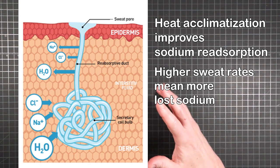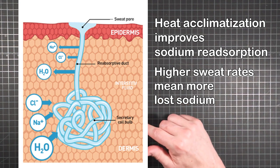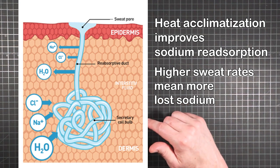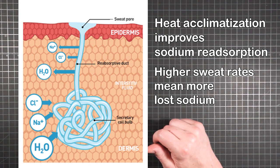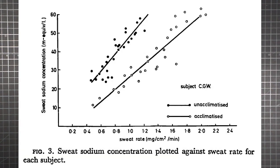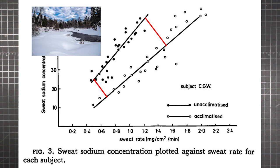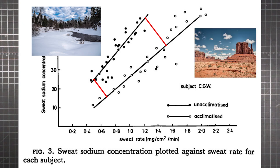And when sweat rates are high, the salty fluid escapes faster than the sodium can be reabsorbed, so more ends up being lost. Also note that the two lines aren't parallel. So while both versions of yourself will lose sodium faster the more you sweat, your Minnesota self is affected by sweat rate increases more than the version of you that just got back from Arizona.